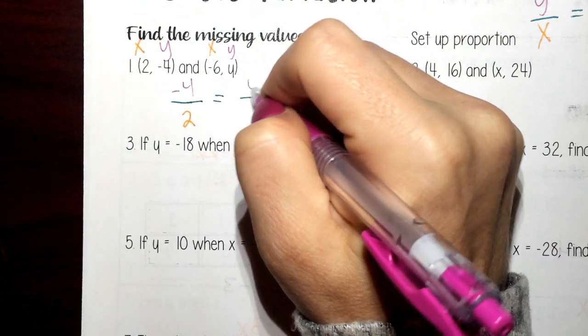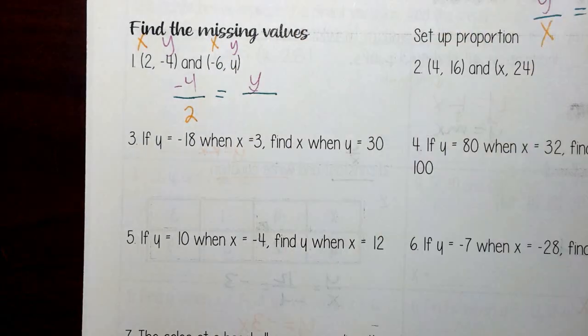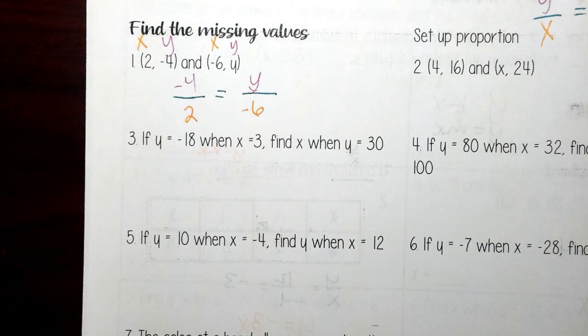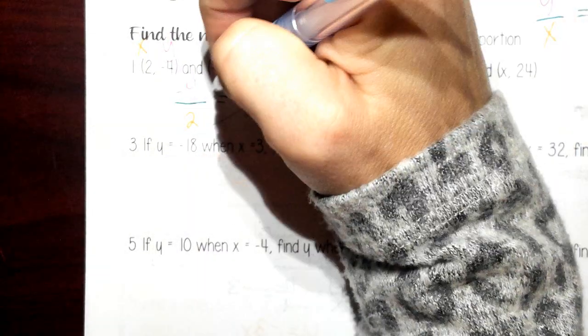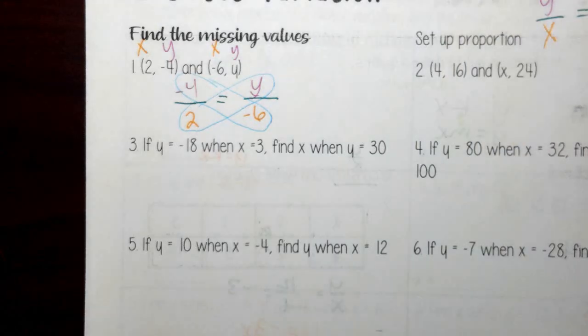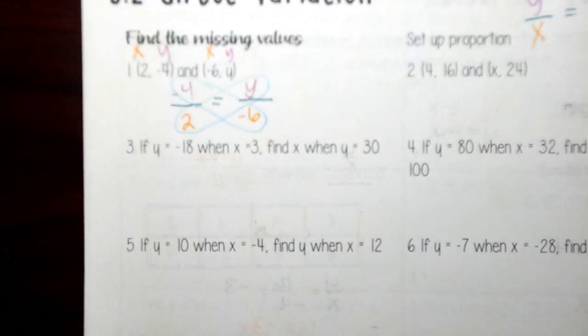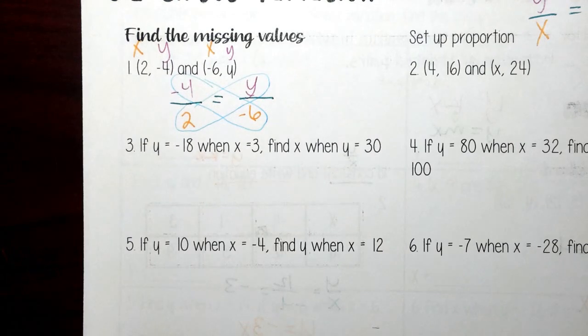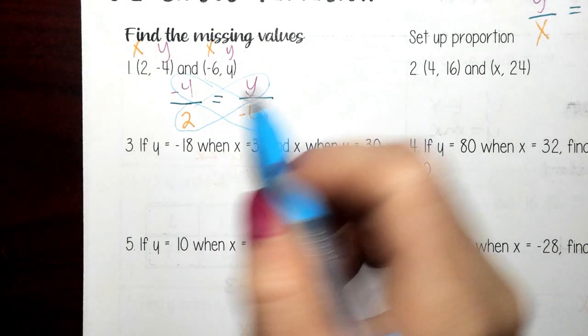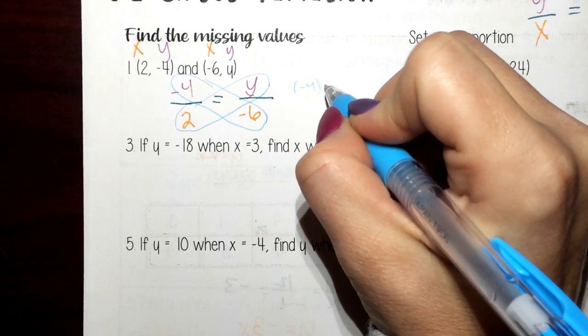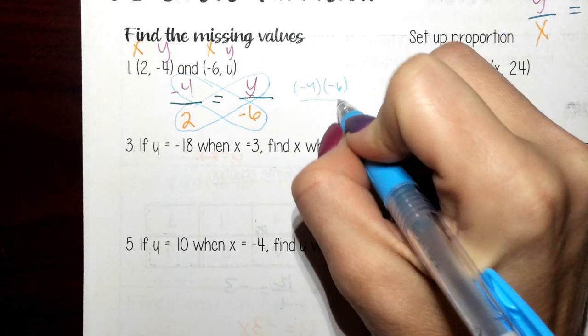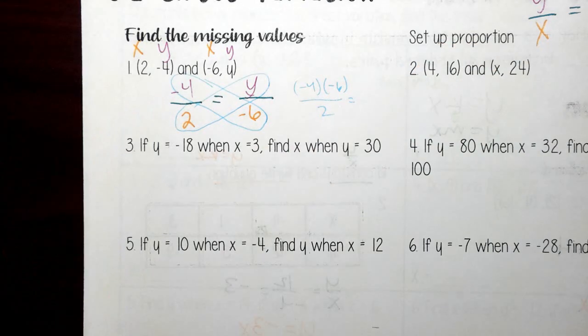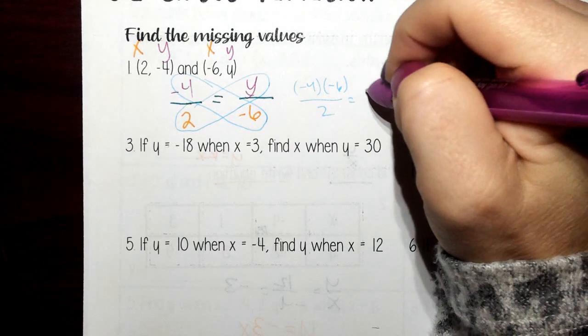equals y, that's my unknown, over negative 6. Now I can figure out what y is by doing our cross multiply and divide, or butterfly method, or just solving for the unknown here. So I would take these two numbers, negative 4, and multiply it by negative 6, and divide it by 2. So here, my y is 12.